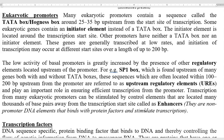Initiator elements are located around the transcription start site. Other promoters have neither a TATA box nor an initiator element, and these genes are generally transcribed at very low rates. Compared to TATA box containing genes, initiator element containing genes are transcribed at a low rate, and the initiation of transcription may occur at different start sites over a length of about 200 base pairs. Eukaryotes also possess certain regulatory elements located upstream of the promoter.